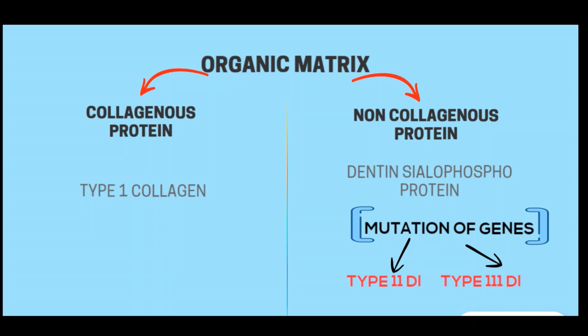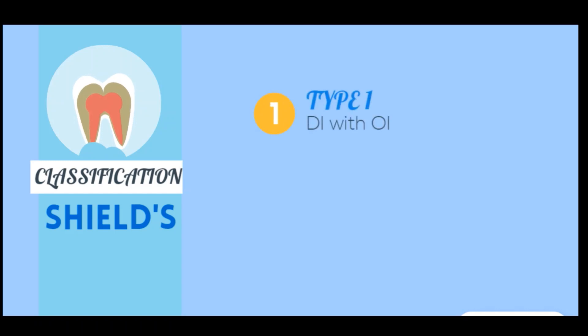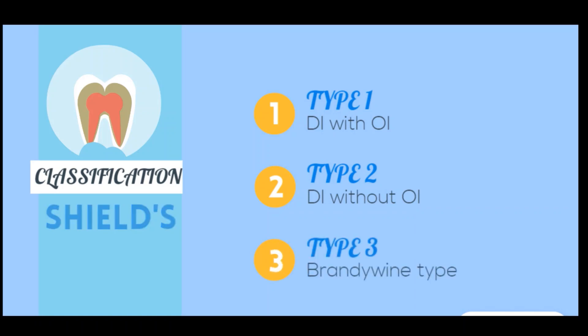Next we will look into the classification. First is the Shields classification. Type 1 is dentinogenesis imperfecta with osteogenesis imperfecta. Type 2 is dentinogenesis imperfecta without osteogenesis imperfecta. Type 3 is the Brandywine type, a rare type characterized by pulp exposure and periapical lesion.